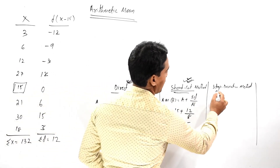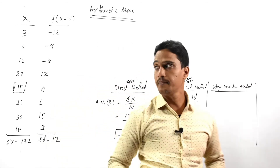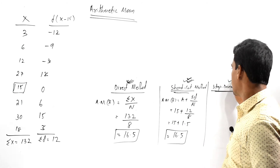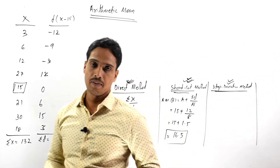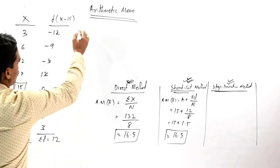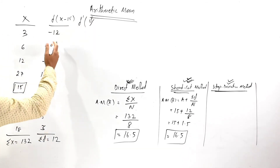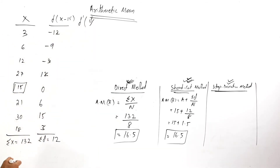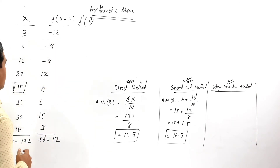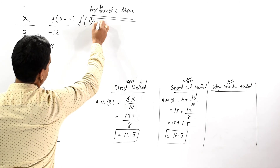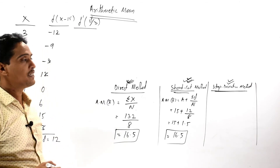Now we find the arithmetic mean of the given individual series under the step deviation method. For the step deviation method, we find D dash, that is D divided by the common factor of the given variables. The common factor of the given variables is 3, so D dash equals D divided by 3.